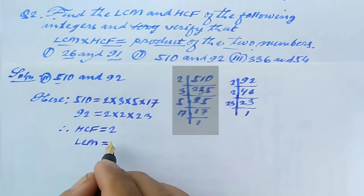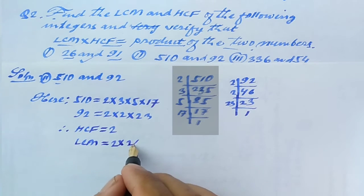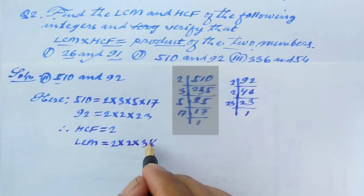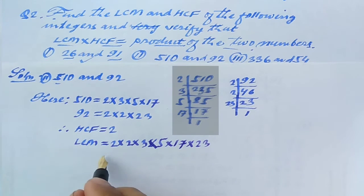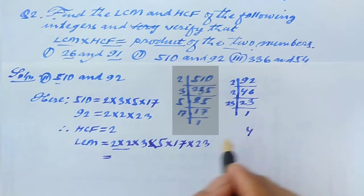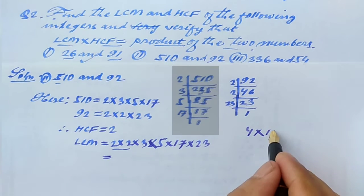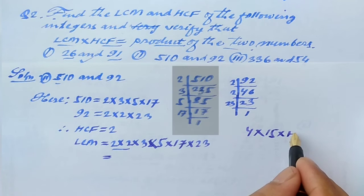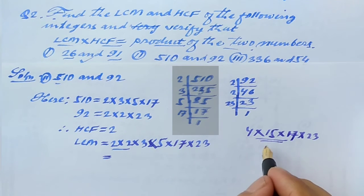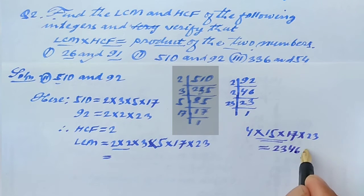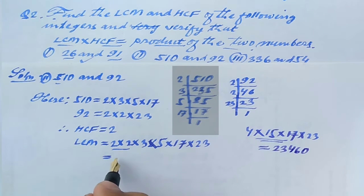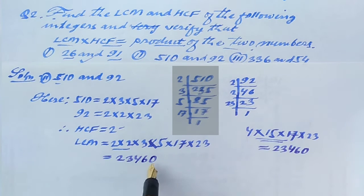For LCM, we write HCF factor 2 once, and include all remaining factors: 2 into 3 into 5 into 17 into 23. Multiplying: 2 squared is 4, times 15 is 60, times 17 is 1,020, times 23 gives LCM equals 23,460.